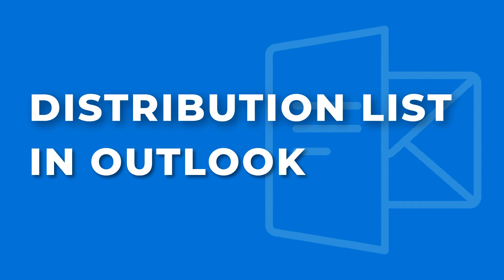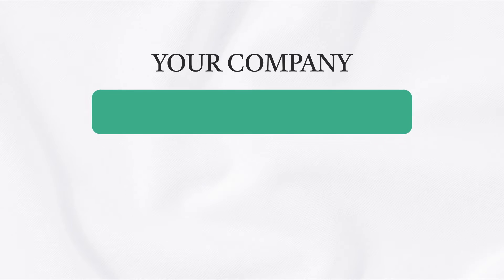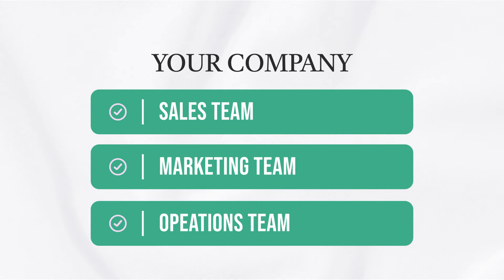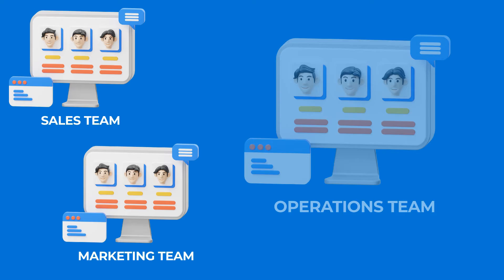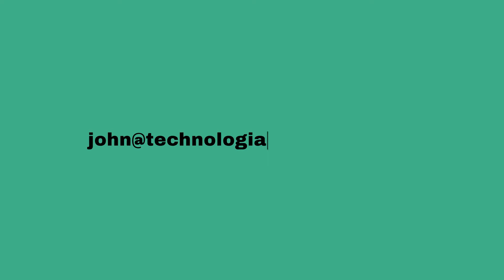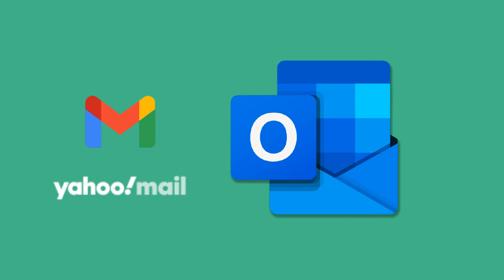In this video I will talk about distribution lists in Outlook. Let's first understand what a distribution list is. Imagine your company has different teams such as a sales team, a marketing team, and an operations team, and each team has multiple people. Each person in the team has their own email address. The emails can be your company email like john@technologyed.com and enrique@technologyed.com, or free emails from gmail.com, yahoo.com, or outlook.com.